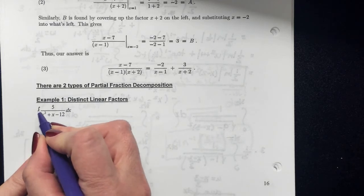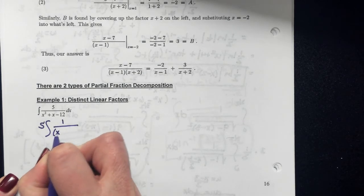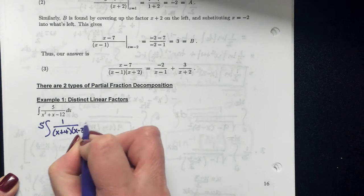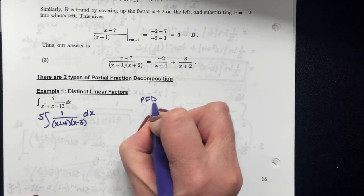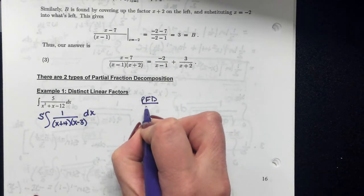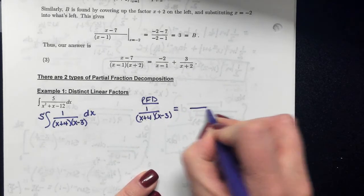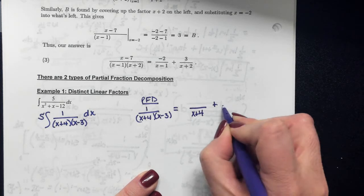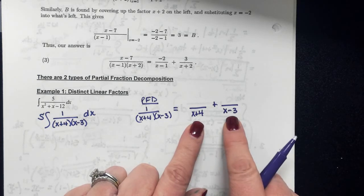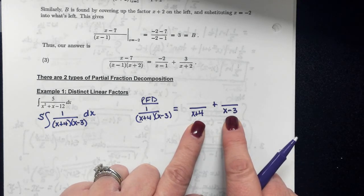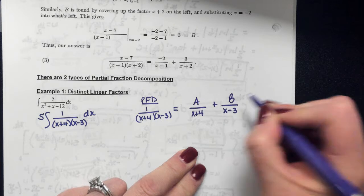First, you can pull the constant out. What constant can you pull out of your integral? You can pull out a 5. So I can rewrite this as 5 times the integral of 1 over (x+4)(x−3) dx. To do my partial fraction decomposition, I'm going to take 1 over (x+4)(x−3) and separate it into two smaller fractions — one with denominator x+4, the other with denominator x−3. Both factors are linear, so the numerators will be constants A and B.